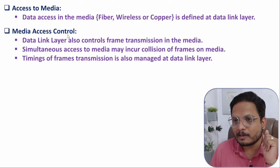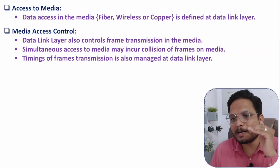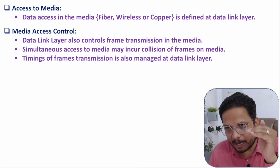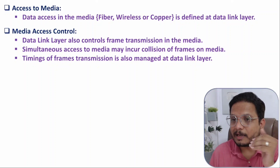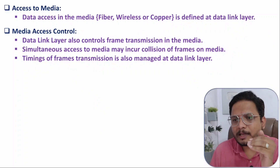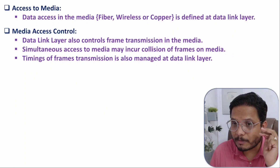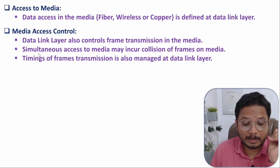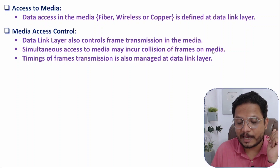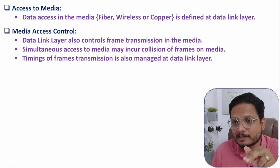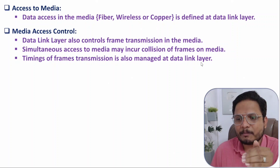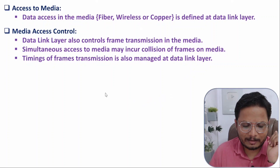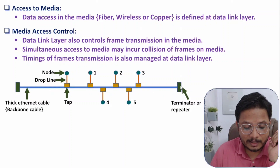The second task is media access control. Once you provide signaling on the media, you are sending data on the media. When data is sent, there should be error-free communication — data should not get lost, and there should be no collision on the media. That control is done by the Data Link Layer. Simultaneous access to the media may cause collision of frames, and the timing of frame transmission is managed at the Data Link Layer.